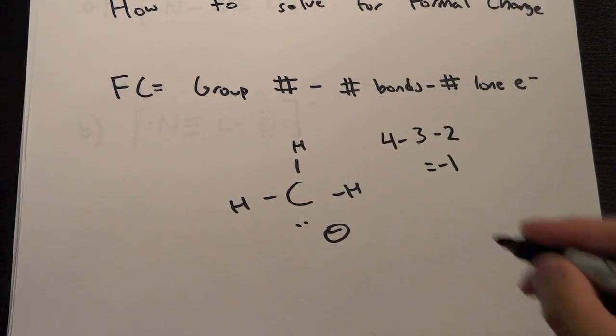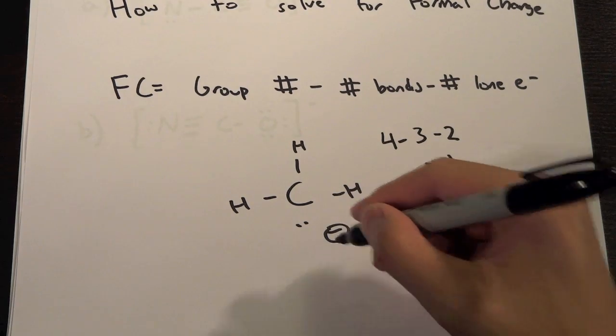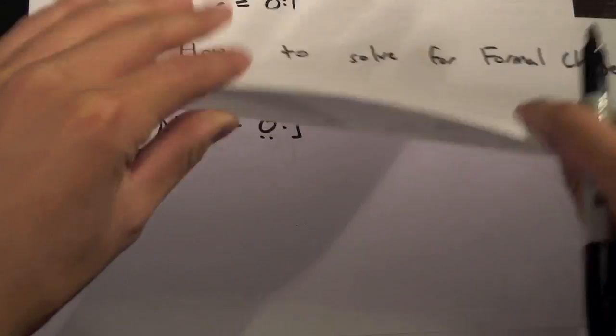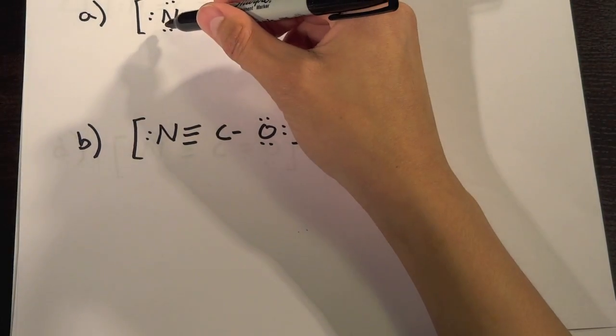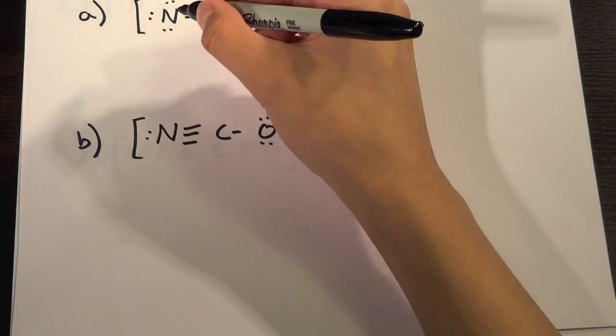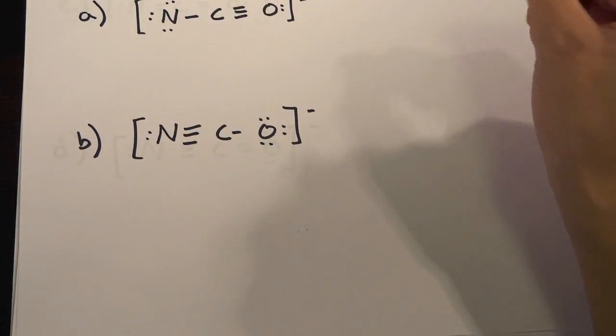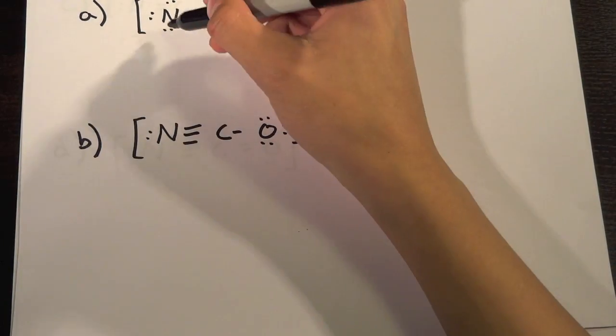So it has a formal charge of negative one and we see that the formal charge also matches the net charge. All right so let's do that for these ones as well so the nitrogen is in group five if we look on the periodic table so it's five minus the number of bonds which is one minus the number of lone electrons which is six.